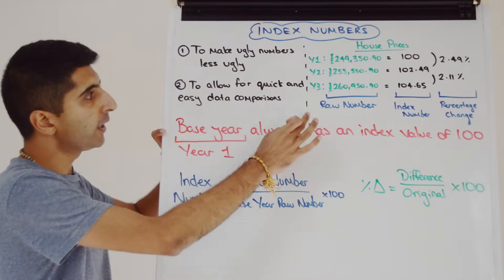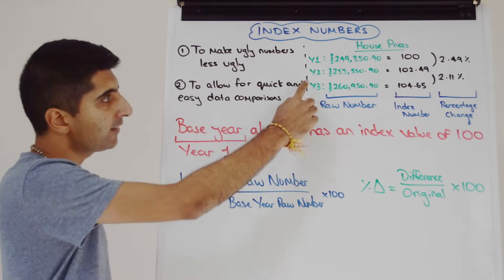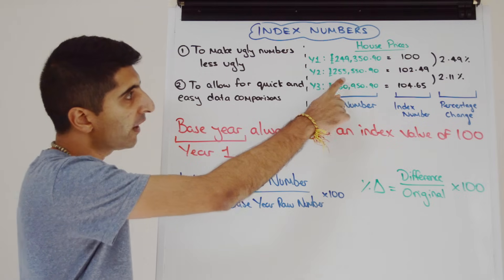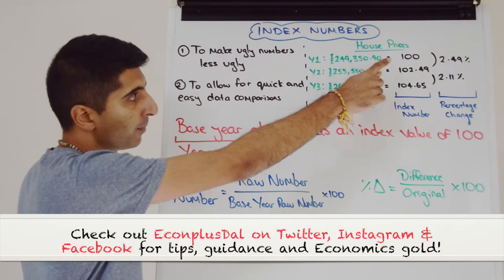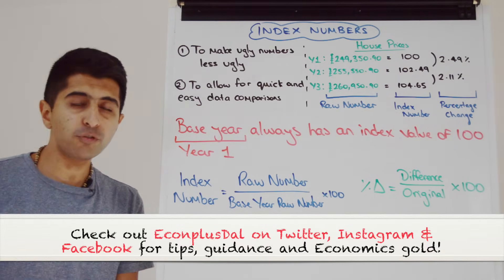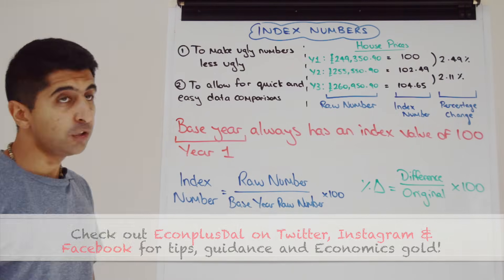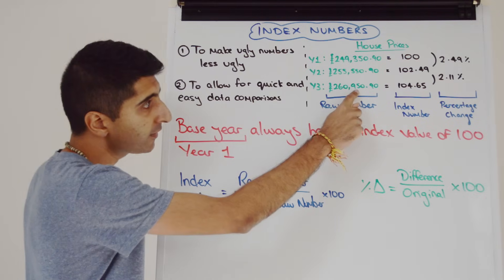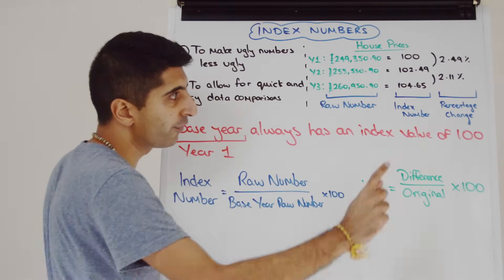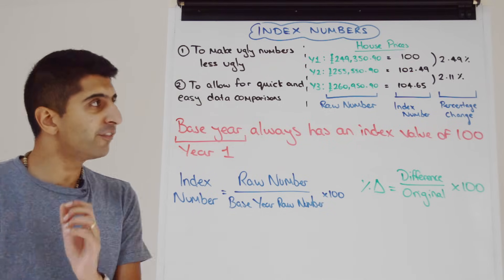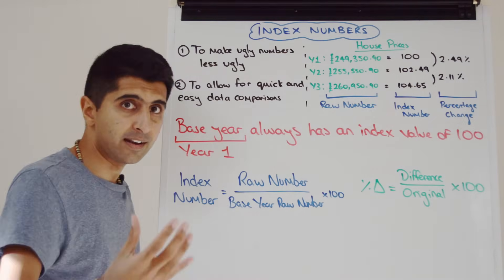Using this equation, we can convert year two and year three raw numbers into index numbers. For year two, we take the raw number 255550.9, divide by the base year raw number 249350.9, multiply by 100, and to two decimal places we get 102.49 — that's the index number in year two. Do the same thing for year three: take that number, divide by the base year number, multiply by 100, and to two decimal places we get 104.65. So that's stage one done — we can convert ugly raw numbers into much nicer numbers, shown here in black. These are our index numbers.